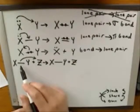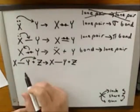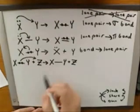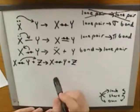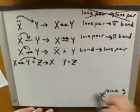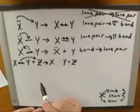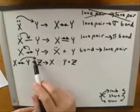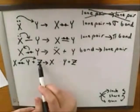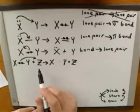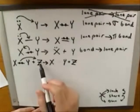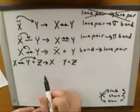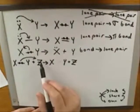The tail of the arrow is coming from the bond, so the electrons must be coming from the pair of electrons in that bond. We can start by erasing that bond since the electrons are leaving there. The head of the arrow is pointing to atom Z, so obviously the electrons are moving towards atom Z. The question is: will atom Z be getting the electrons in a new bond or in a lone pair?